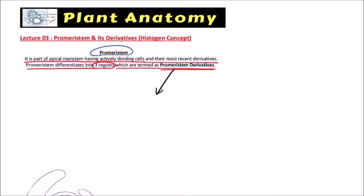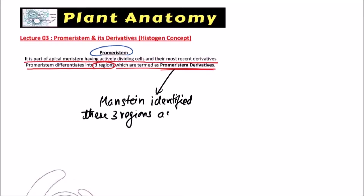These three regions were identified by Heinstein as histogen. Histo means tissues and gens means to generate. So these are tissue-generating regions.